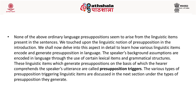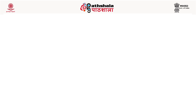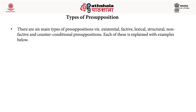We touched upon the linguistic notion of presuppositions in the introduction. We shall now delve into this in detail to learn how various linguistic items encode and generate presuppositions in language. The speaker's background assumptions are encoded through the use of certain lexical items and grammatical structures. These linguistic items which generate presuppositions — on the basis of which the hearer comprehends the speaker's utterance — are called presupposition triggers. We will now discuss the various types of presupposition-triggering linguistic items under the type of presupposition they generate, and move on to the types of presuppositions.